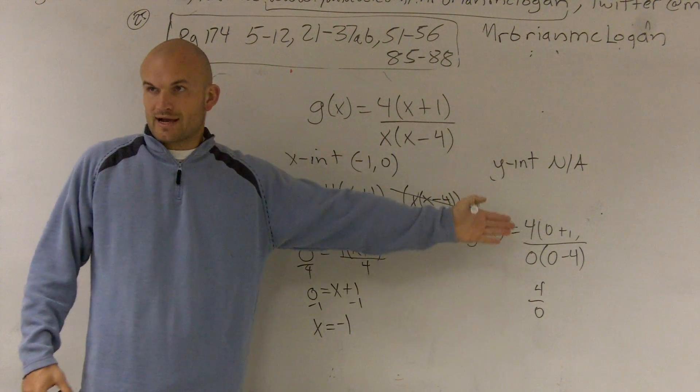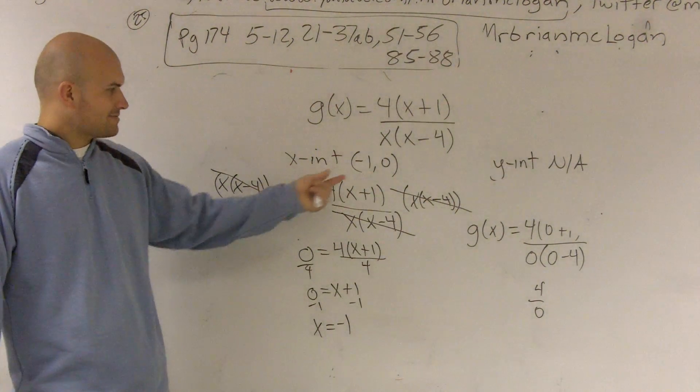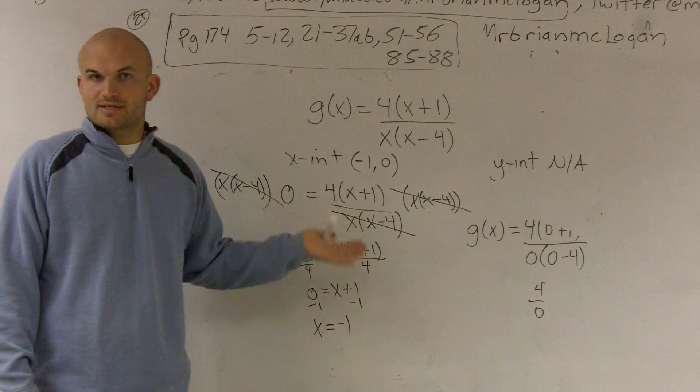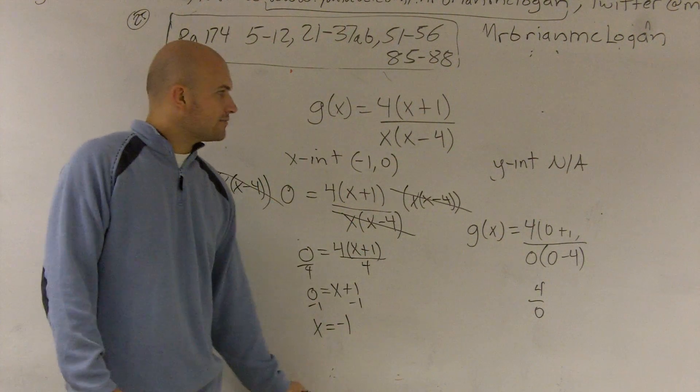For a y-intercept, you plug 0 in for x. For the x-intercept, you plug a 0 in for your y, or your output value, f of x. Make sense?